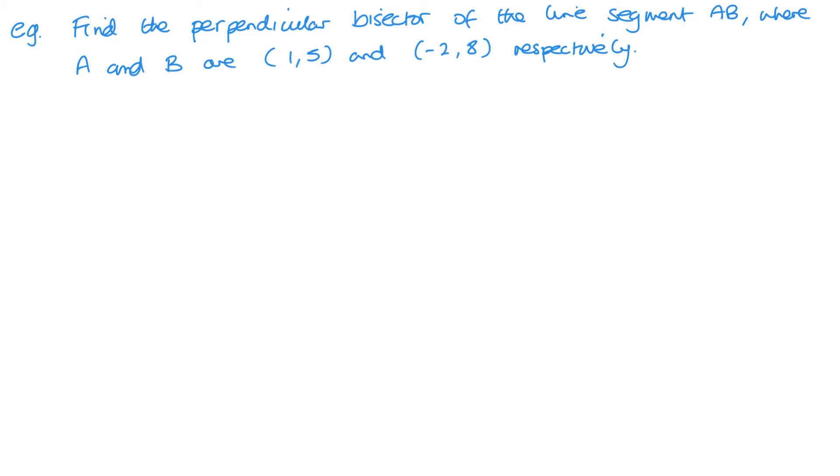Now, for this one, we need to find the perpendicular bisector of the line segment AB, where A and B are (1,5) and (-2,8). So, here's a rough sketch of what we're looking at. Something along these lines. Now, we want the perpendicular bisector. So, that's going to happen at the midpoint. And then we're essentially looking at this line. I might not have got it perfectly in the middle there, but that is what we're looking at going through the midpoint.